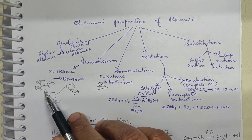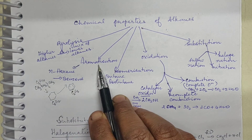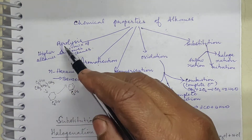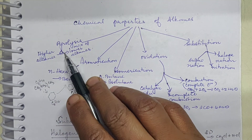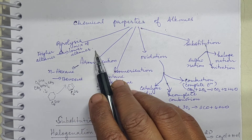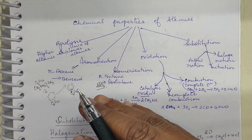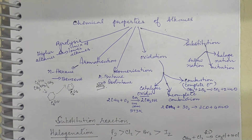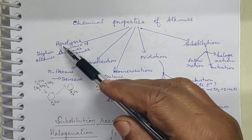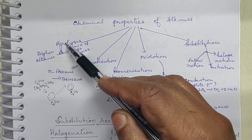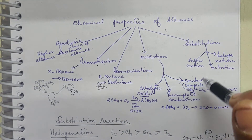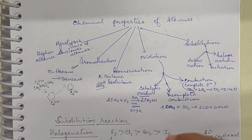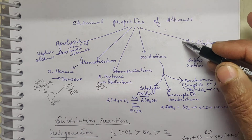Pyrolysis — 'pyro' means fire. When higher alkanes are heated, you get a mixture of lower alkanes and alkenes. For example, starting with hexane you may get ethene and butane. Pyrolysis means breaking by heat; heating higher alkanes gives a mixture of lower alkanes.